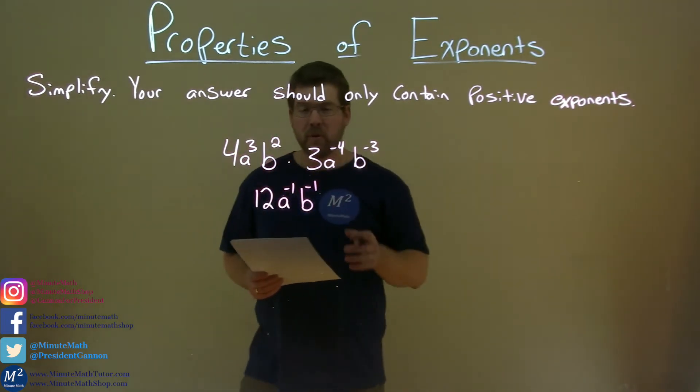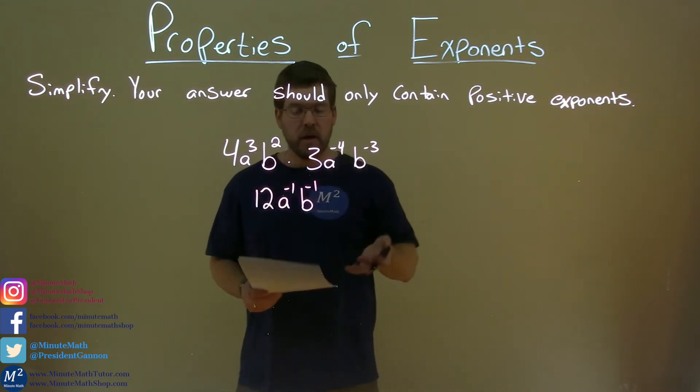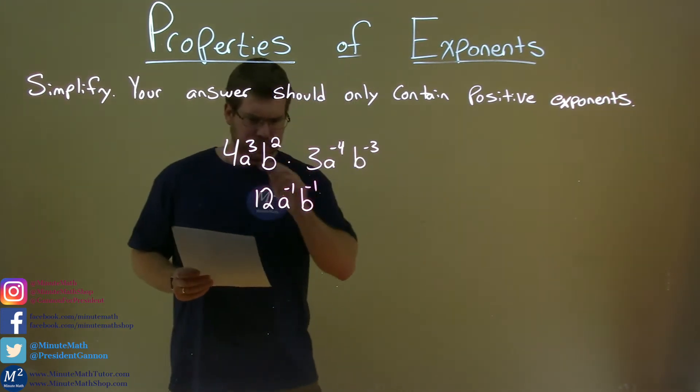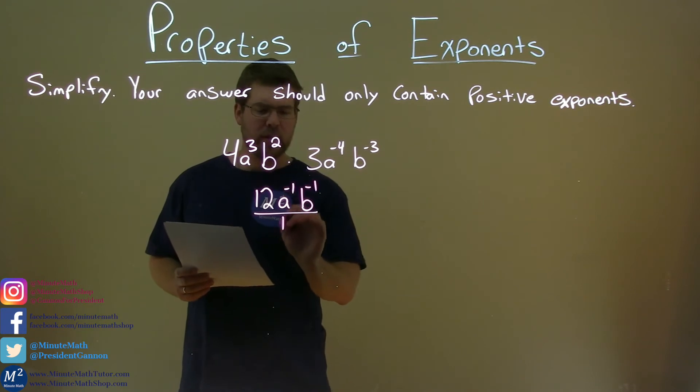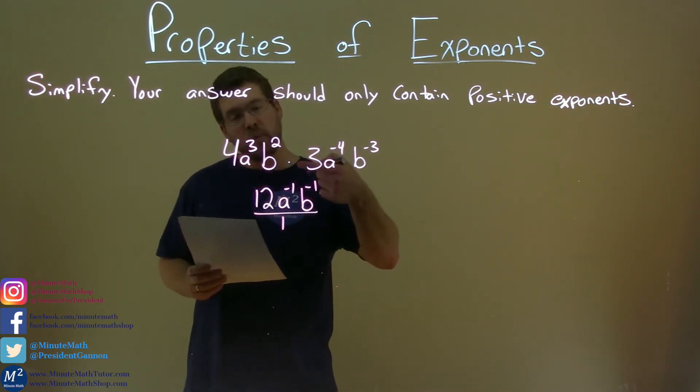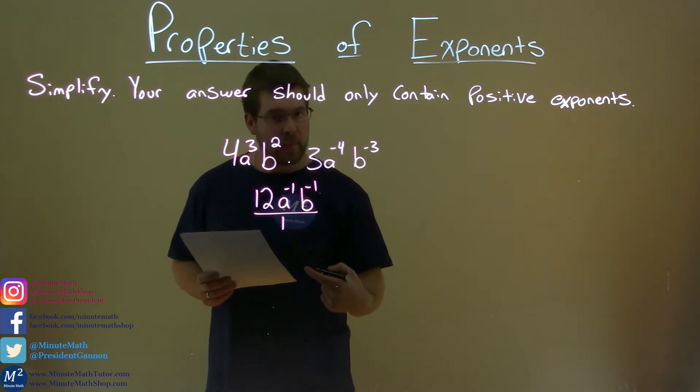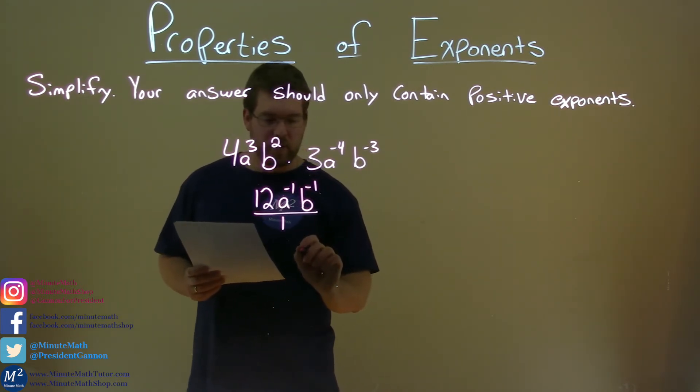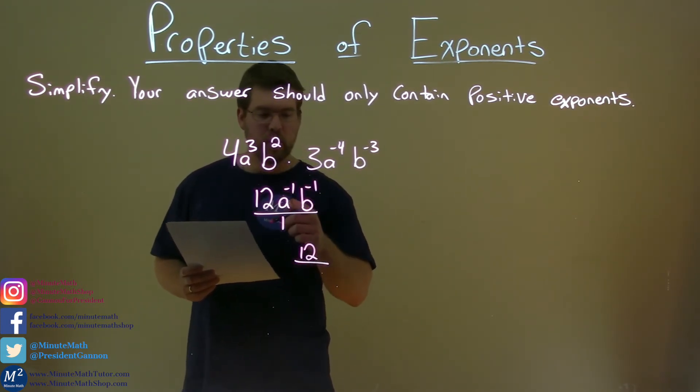If you remember from before, we cannot have a negative exponent, so we have to rewrite this. This whole thing is kind of like a fraction, and we can bring that negative 1 in the numerator to a positive 1 in the denominator when it's an exponent. So we have 12 left in the numerator. Bring both these down.